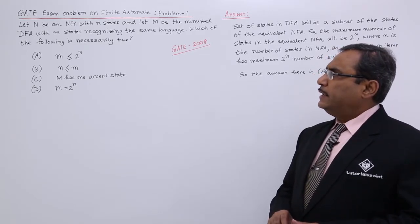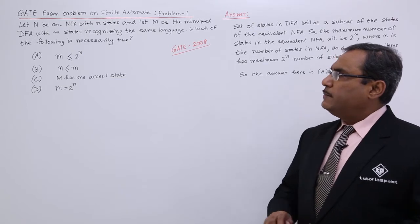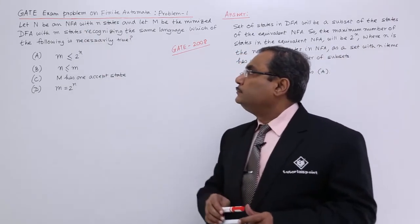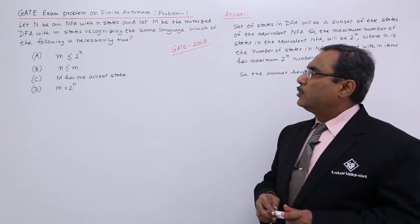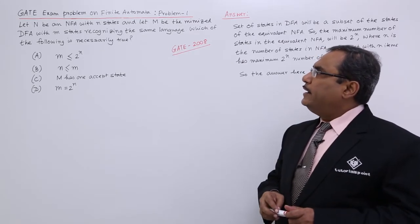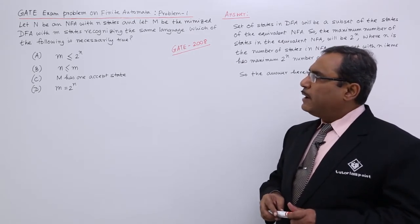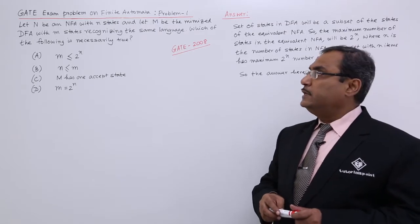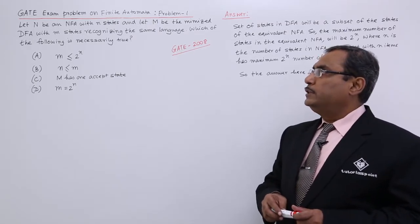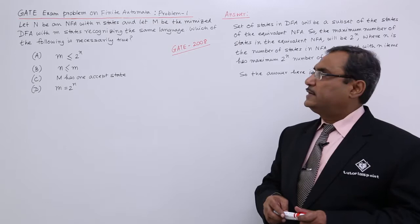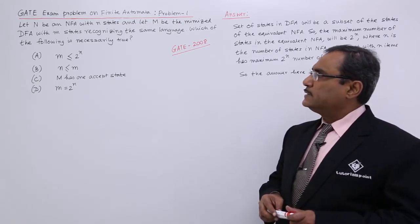Let N be a non-deterministic finite automaton with small n number of states and let capital M be the minimized DFA, that is the deterministic finite automaton with small m number of states, recognizing the same string.